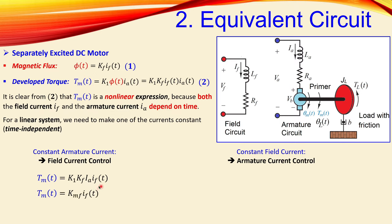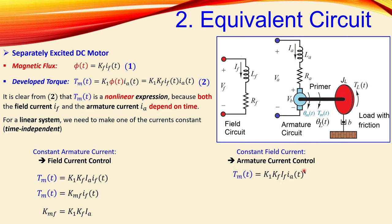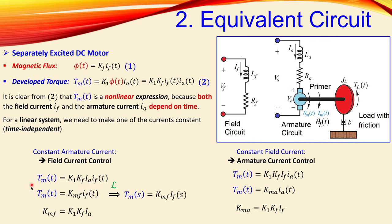For field current control with constant i_a, we combine k_1, k_f, and i_a into one constant k_mf (the f specifying field current control), giving T_m = k_mf · i_f(t). For armature current control with constant i_f, we have k_ma · i_a(t). These are similar expressions — just a difference in which is constant and which varies. Applying the Laplace transform (assuming zero initial conditions) gives the s-domain expressions used going forward.